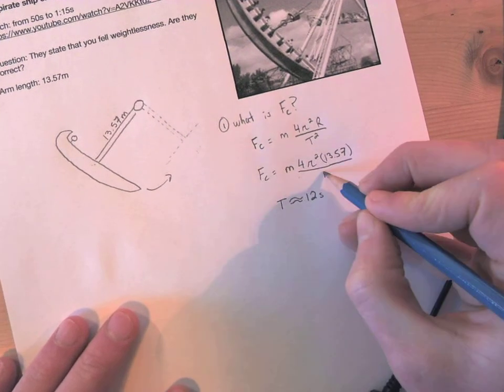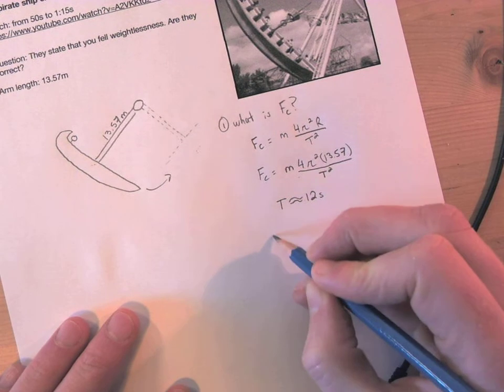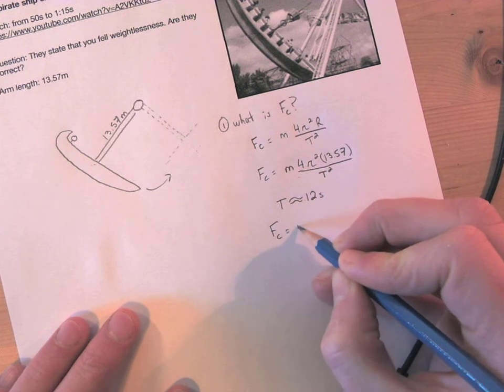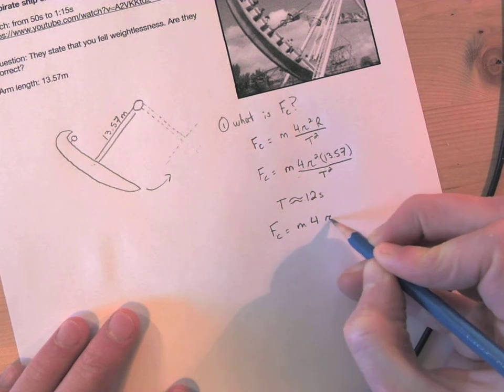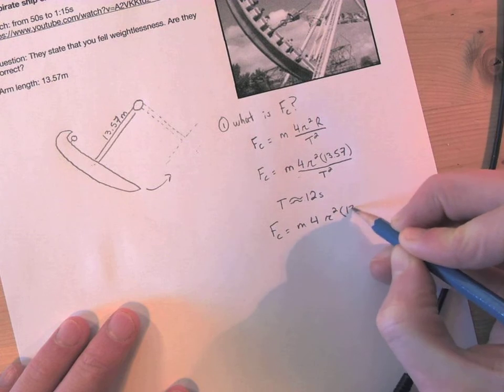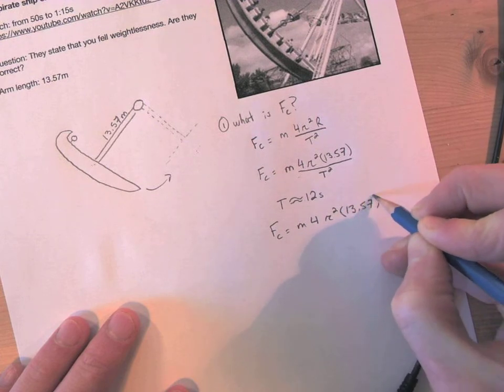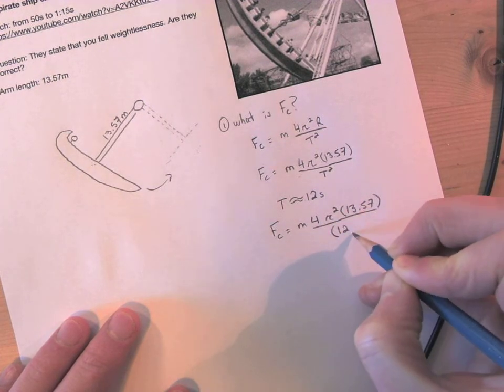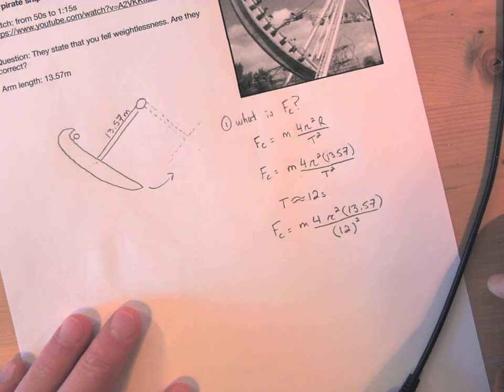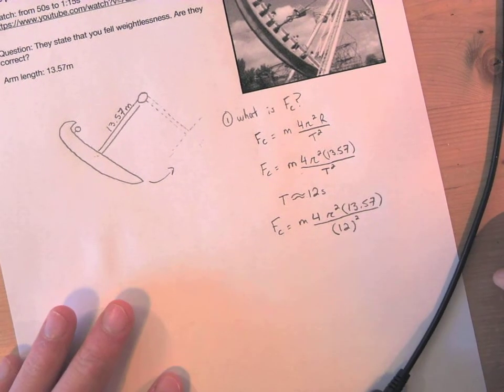So with that, we can write our equation again: FC equals m 4 pi squared 13.57 all over 12 squared.